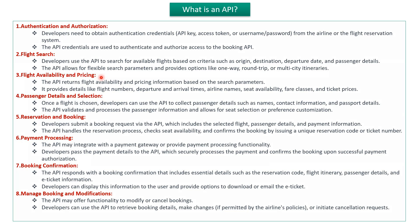The third one is the flight availability and pricing related API. This API returns flight availability and pricing information based on the search parameters. It also provides details like flight numbers, departure time, arrival time, airline names, seat availability, fare classes, and ticket prices.